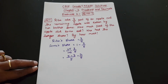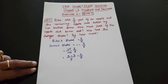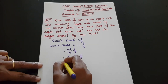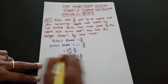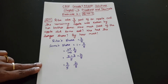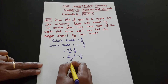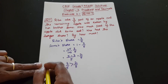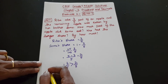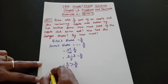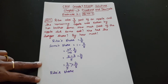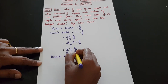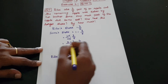So, Somu's share is 2 by 5. Who had the larger share? Compare the shares: 3 by 5 and 2 by 5. Denominators are the same. 3 is greater than 2, so 3 by 5 is greater. Reeta's share is the larger share.